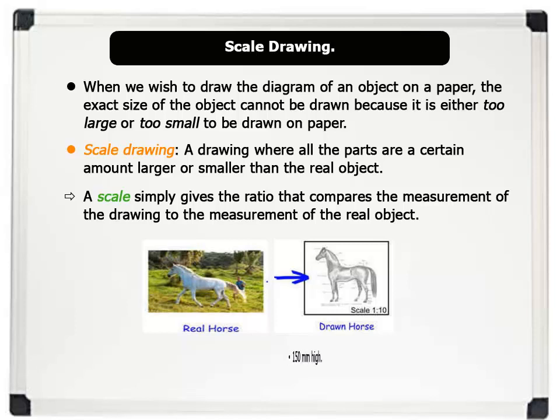So, if the drawn horse is 150 millimeters high, the real horse is 1500 millimeters high, giving the ratio 1 is to 10. Note that this scale is written as a ratio only if the numbers have the same units or quantities. That's very good.